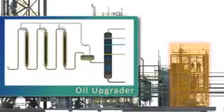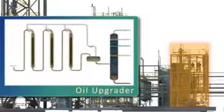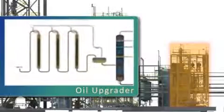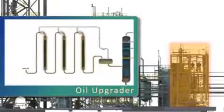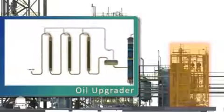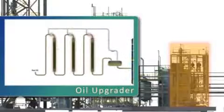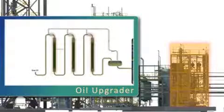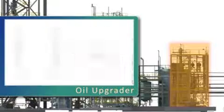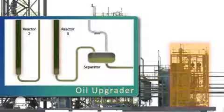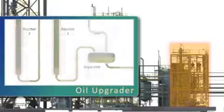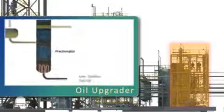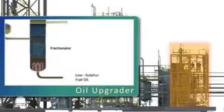Raw oil is pumped into the reaction section of the upgrading plant and is heated in the presence of hydrogen and catalyst. The oil is upgraded and fed to a separator before entering what is known as the fractionator, where the oil is heated and separated on the basis of boiling point.